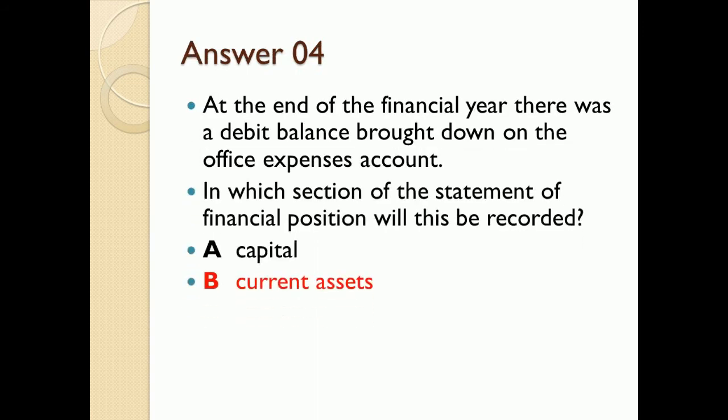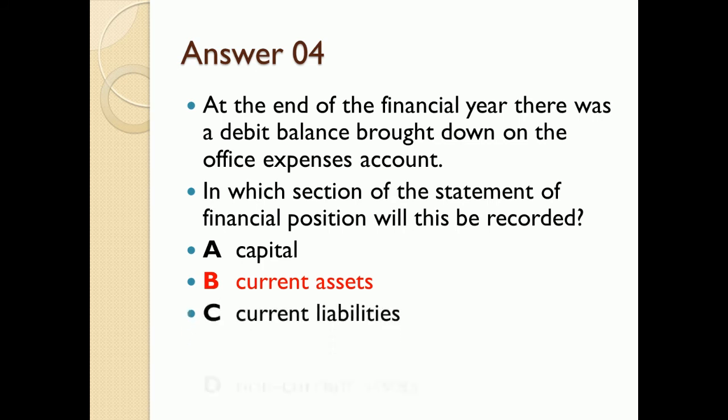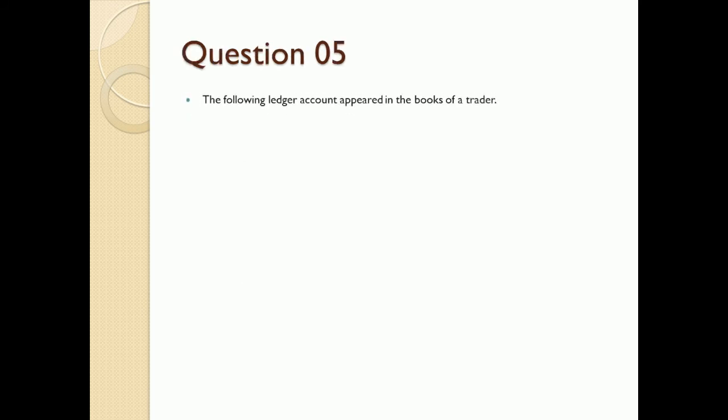The correct answer is B — current assets. You need to explain why it is not capital, not current liability, and not non-current assets. Now let's look at question five.